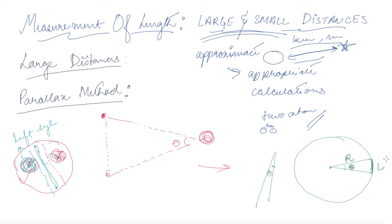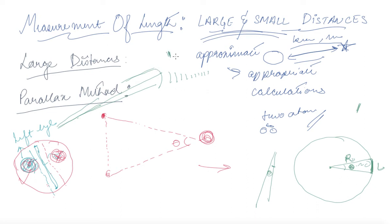When theta tends to almost zero, this arc becomes a straight line. For huge distances and very small angles, the curve slowly becomes a straight line. If your radius R is very big and you keep decreasing the angle, it gives you a straight line. So if this is your R and this is your arc L, then R is given by L divided by theta.